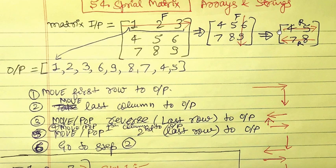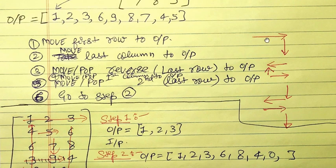Now we're left with [[4,5]] and we need to go bottom-to-top for the fourth step. We repeat: left-to-right, top-to-bottom, right-to-left, bottom-to-top, continuing this spiral order until the matrix is finished. For this remaining element, we get four five. These arrows show the four directional operations that define the spiral.